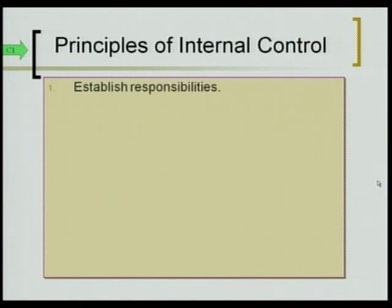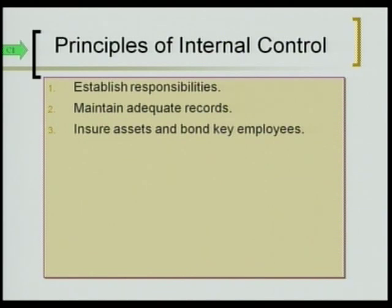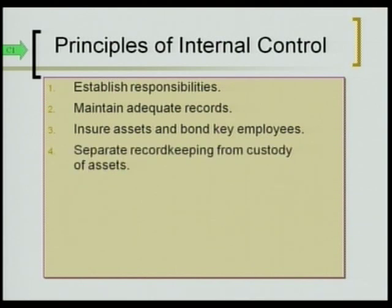The principles of internal control: you want to establish responsibility — who is supposed to do what. Maintain adequate records that support the journal entries you make. Insure assets and bond your key employees. Separate your record keeping from your custody of assets. This is a big one — if you have custody of assets, whether it's cash or warehouse items, you should not also be doing record keeping and journal entries. Otherwise you could steal the asset and just make a journal entry.